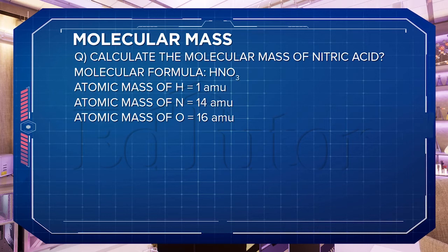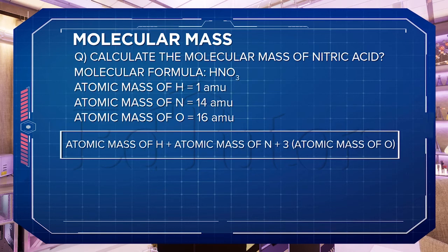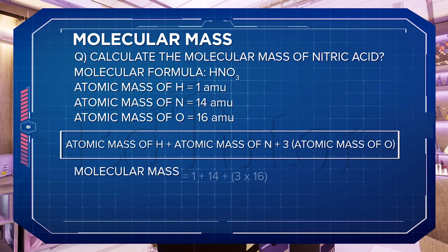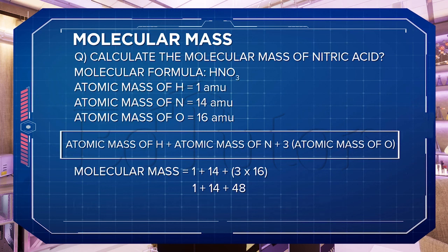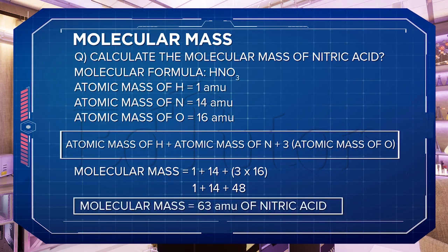To find the molecular mass, I will do the following: atomic mass of H plus atomic mass of N plus 3 times the atomic mass of O, since there are 3 oxygen atoms in the formula. That gives us 1 plus 14 plus 3 times 16, which becomes 1 plus 14 plus 48. By adding up the atomic masses of these 3 elements, we get 63 amu as the molecular mass of nitric acid.